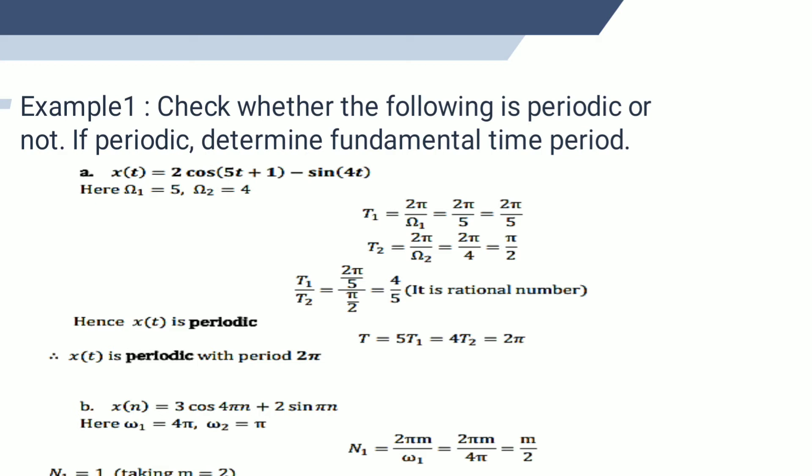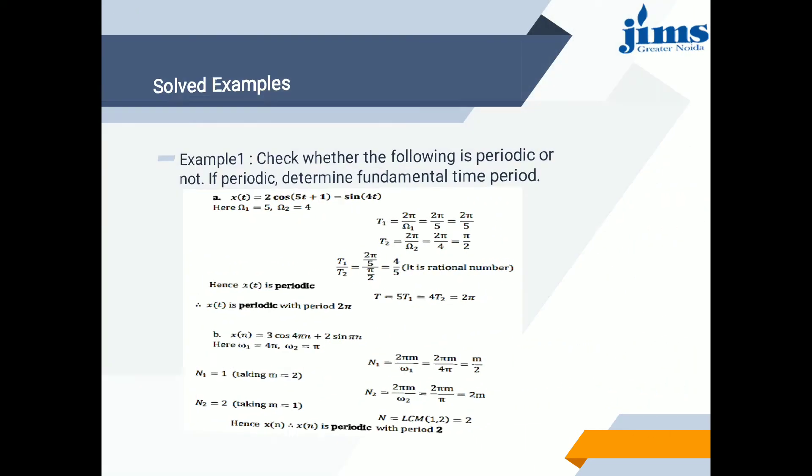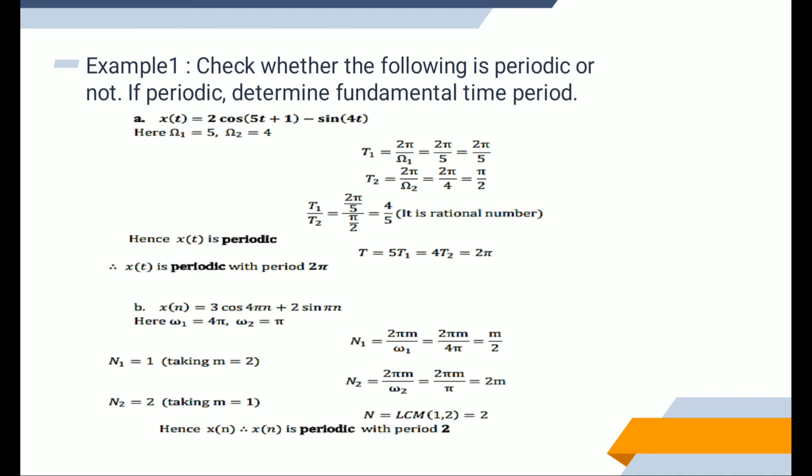When checking whether a mathematical expression is periodic or non-periodic, if T₁/T₂ is a rational number then the given function is periodic. Since T₁/T₂ = 4/5, which is a rational number, x(t) is a periodic signal and the fundamental period of x(t) is equal to 2π.